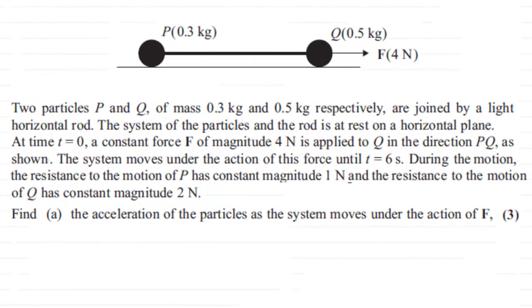Hi. Now for this question, it's all about connected particles. What we've got here is two particles P and Q of masses 0.3 kilograms and 0.5 kilograms respectively, and they are joined by a light horizontal rod.